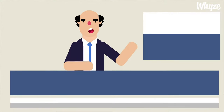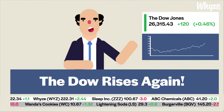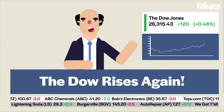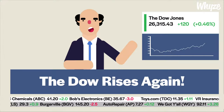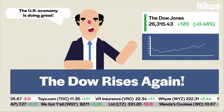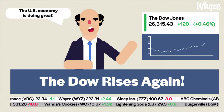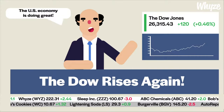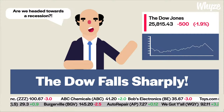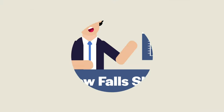The Dow is one of the most closely watched indices in the world as it is an indicator of how shares of some of the largest U.S. companies are performing. Since the Dow includes top U.S. companies from multiple industries, it is commonly used as an indicator of how the U.S. stock market as a whole is performing. For instance, if the Dow has increased in value by the end of the trading day, investors will expect the rest of the U.S. stock market to increase as well. If the Dow has decreased, investors will expect the rest of the U.S. stock market to decline as well.